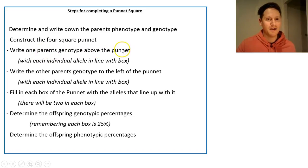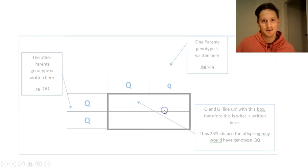Write down one parent's genotype above and one parent's genotype to the left. Now it doesn't matter which side is which. Mum or Dad doesn't have a specific position. You then cross-reference and fill in the Punnett. You're going to have two alleles in the box because a body cell is going to have two copies of the alleles, as opposed to the sex cells which only have one. You determine the offspring genotypic percentages. Each box is worth 25% and you can get the phenotypic percentages too.